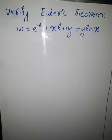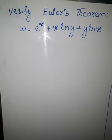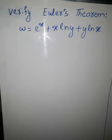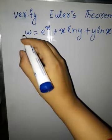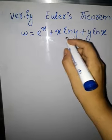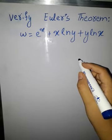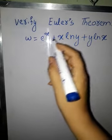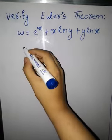Verify Euler's theorem: w is equal to e^x + x·ln(y) + y·ln(x), where w is a function in which x and y are two independent variables. To verify Euler's theorem, we have to verify that w_xy equals w_yx.